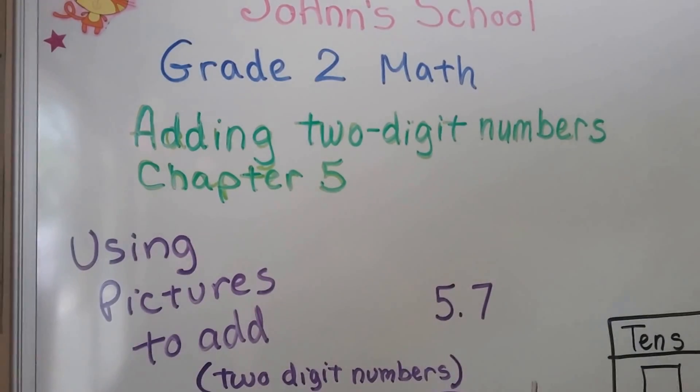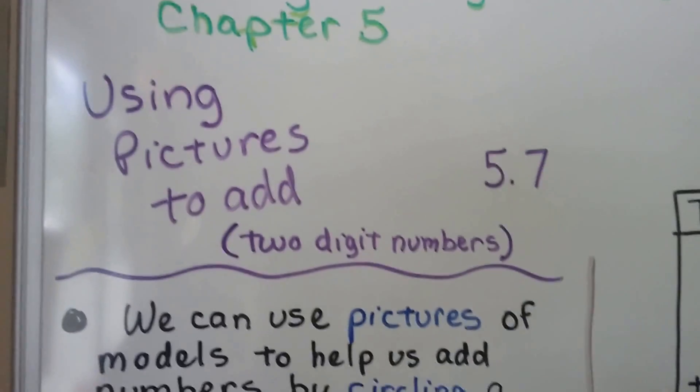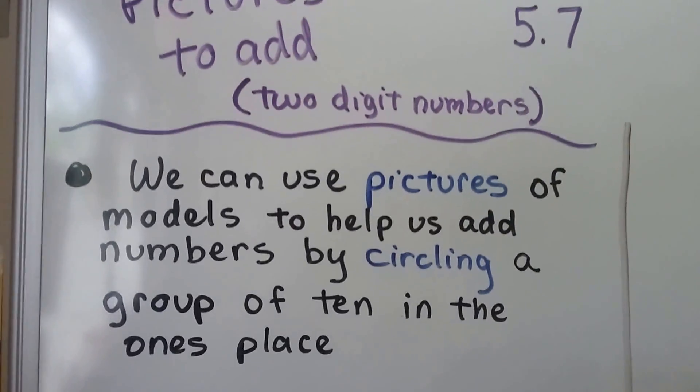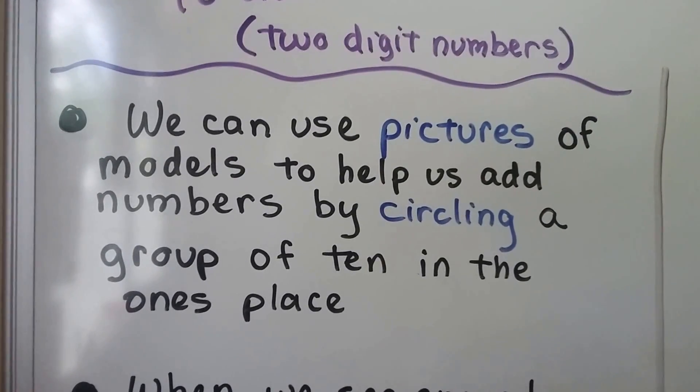We're going to talk about using pictures to add. This is lesson 5.7. We can use pictures of models to help us add numbers by circling a group of 10 in the ones place.